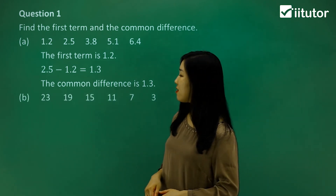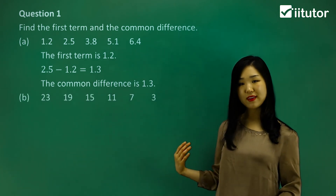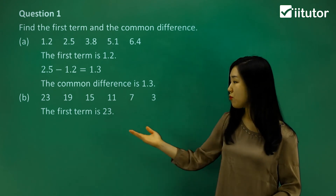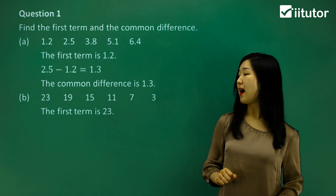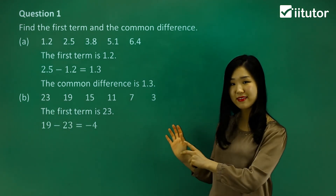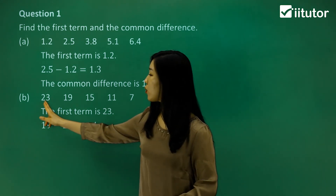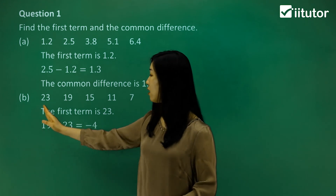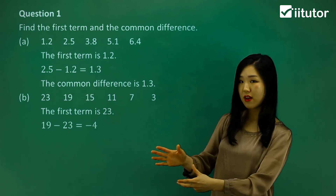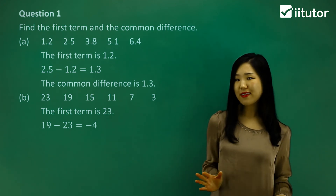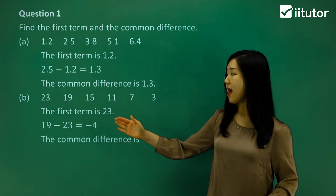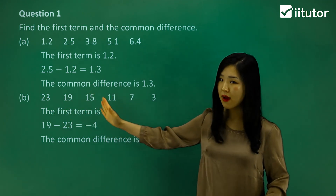Now let's look at another one. This time it's actually going down — descending order — so you can see that the common difference must be negative. The first term is simply the first one in the sequence, which is 23. To find the common difference, make sure it's always the next number minus the number prior to it. So you don't do 23 minus 19; you do 19 minus 23. Or 15 minus 19. Or 11 minus 15. Always the next number minus the prior number. And you can see that's negative 4. It must be negative 4 because it's going down. So the common difference is negative 4, and you can verify: 23 minus 4 is 19, minus 4 is 15.